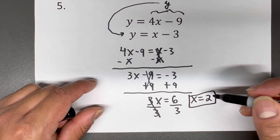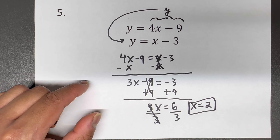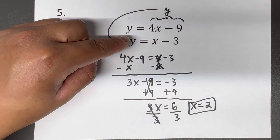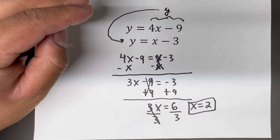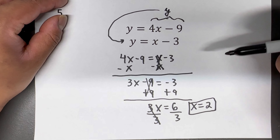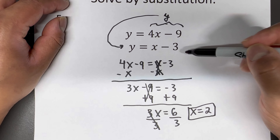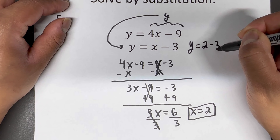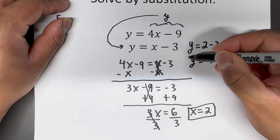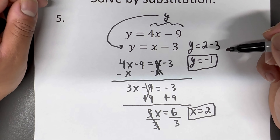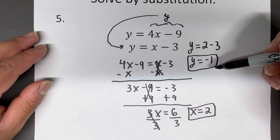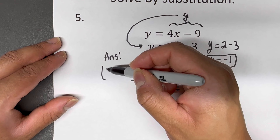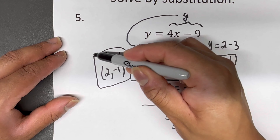We found the first part of the solution. Now we plug X equals two back in — I'll use the second equation since it looks easier. Y equals X minus three becomes Y equals two minus three, which gives Y equals negative one. So X equals two and Y equals negative one — the solution is (2, -1).